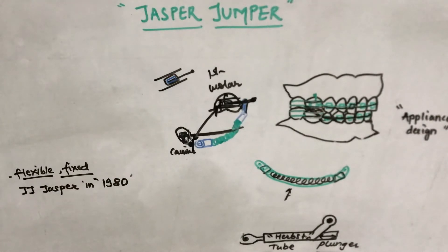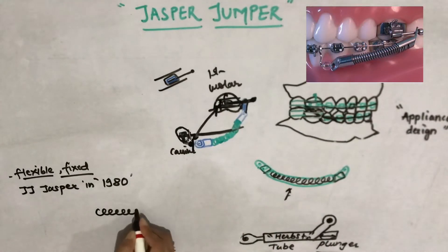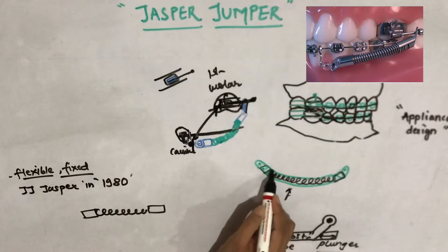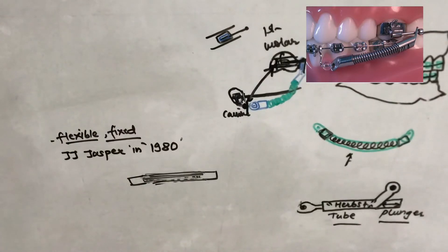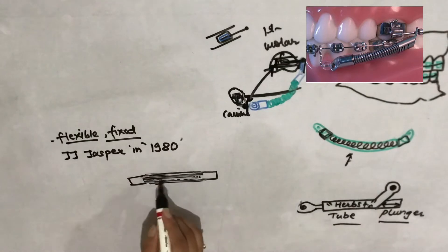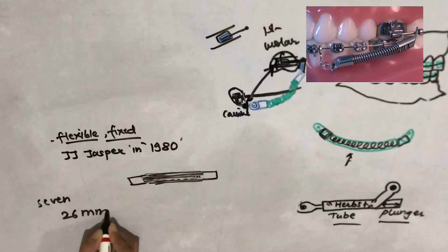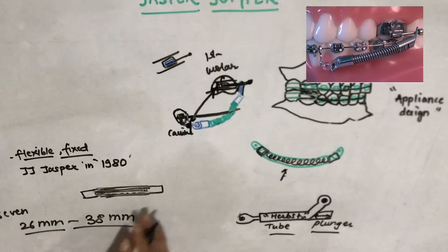The Jasper Jumper is constructed with a stainless steel coil attached at both ends to stainless steel caps. The coil is then covered with a polyurethane material. This module is given an opaque polyurethane covering for the purpose of hygiene and comfort. The Jasper Jumper is available in seven sizes, ranging from 26 mm to 38 mm in length.